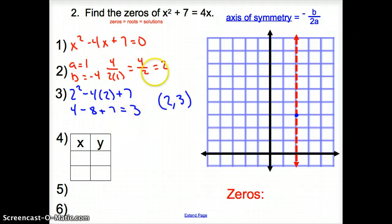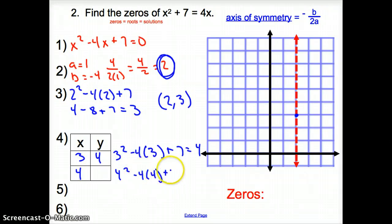Our next step is to pick 2 points greater than or less than our axis of symmetry. I'm going to pick 3 and 4. I plug 3 in for this equation. So it is 3 squared minus 4 times 3 plus 7, which gives me 4. Then I plug in 4: 4 squared minus 4 times 4 plus 7. That gives me a value of 7.